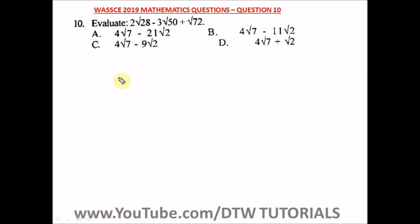Question 10 of the WAEC 2019 Mathematics past paper — we need to evaluate this expression. To solve it, all you need to do is break down these bigger values under the square roots into a number that is a perfect square multiplying another number. Knowing your times tables will help you work quite fast.